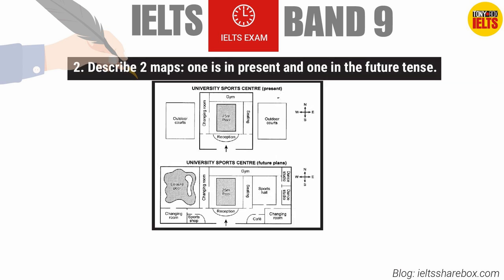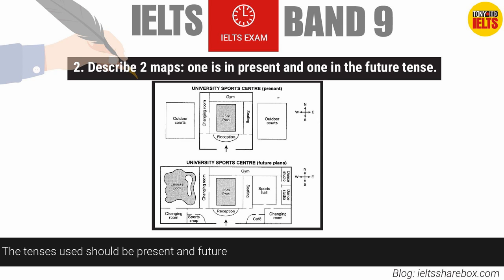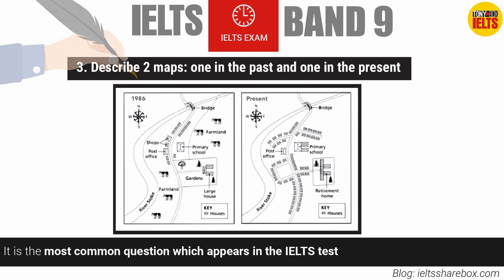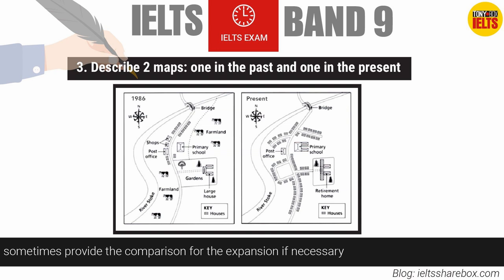The second type is to describe two maps — one in the present and one in the future tense. We sometimes see this question when it describes the future development of a village, district, or city. The tenses used should be present and future. The third type is to describe two maps — one in the past and one in the present — which is the most common question appearing in the IELTS test.